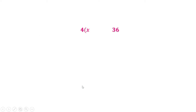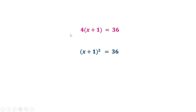Let us look at the two equations we obtained: 4(x + 1) = 36, and (x + 1)² = 36. In the first equation there is only x; when you multiply we get 4x, so the power of x is 1 — it is a first degree or linear equation. In the second equation, when you expand you get x², so the highest power of x is 2. Therefore it is called a second degree equation — an equation in which the highest power of the variable is 2.